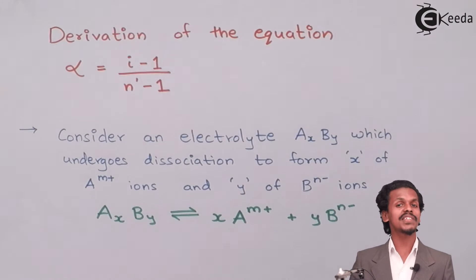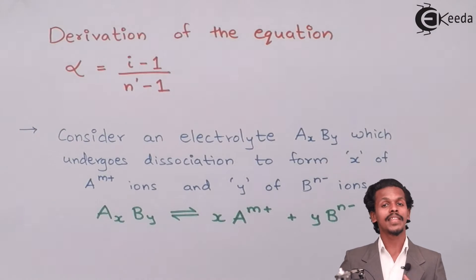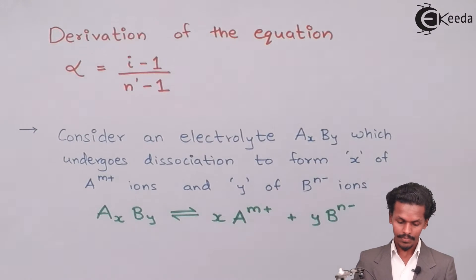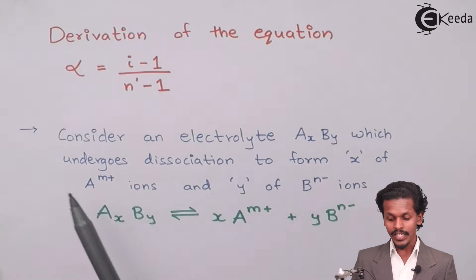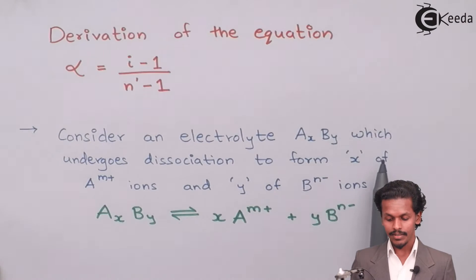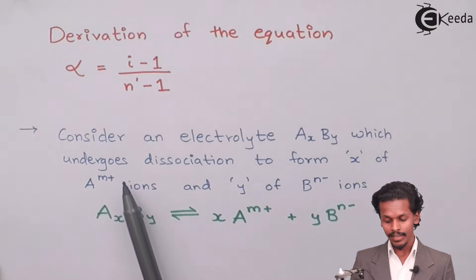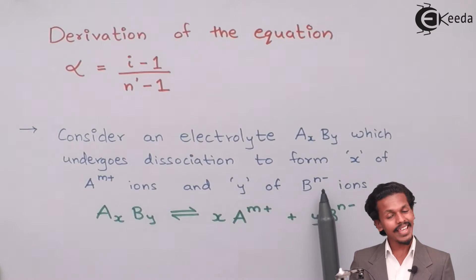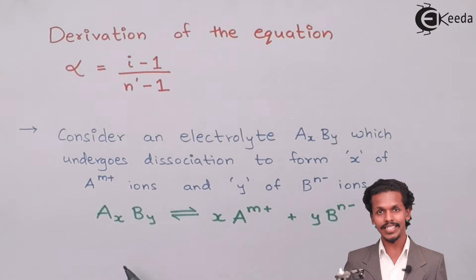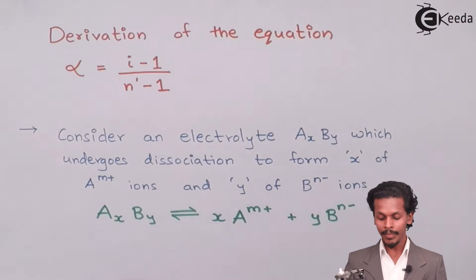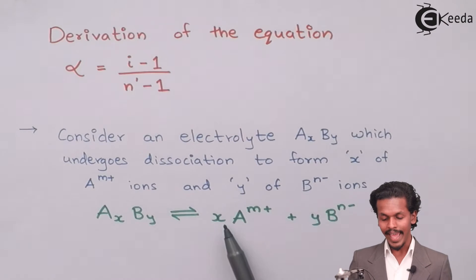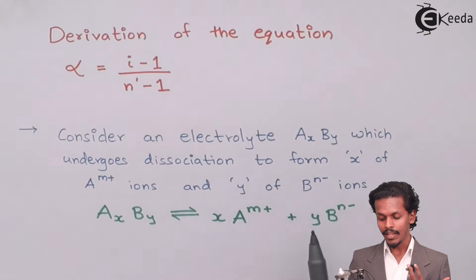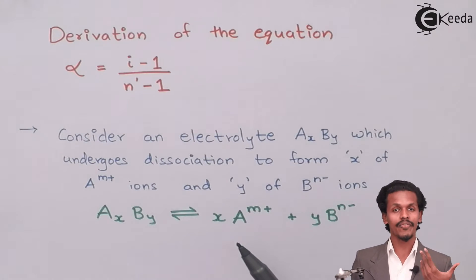Let us find what is the degree of dissociation, which is related to the Van't Hoff factor. Consider an electrolyte AXBY which undergoes dissociation to form X moles of A^(M+) ions and Y moles of B^(N-) ions. This is the equilibrium representation: AXBY dissociates to form X moles of A^(M+) and Y moles of B^(N-).